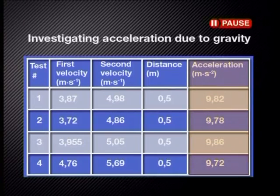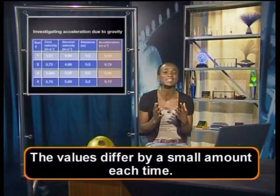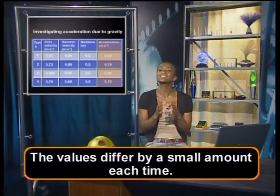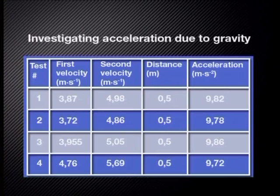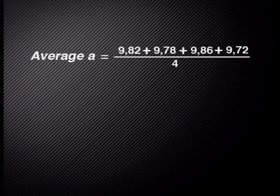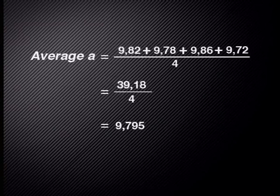I'm sure you've noticed something here. Can you think of possible reasons for this? There is always experimental error when performing experiments. This is the reason why we repeat tests several times in order to record more accurate results. Now we can find the average of the acceleration calculated. To do this, we add all 4 of the accelerations together and then divide by 4. We end up with an average acceleration of 9.795, which rounds off to 9.8 meters per second squared.